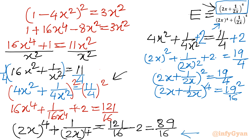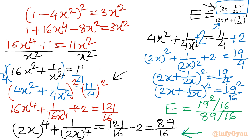Our expression E equals numerator (2x + 1/(2x))⁴ = 361/16 divided by denominator (2x)⁴ + 1/(2x)⁴ = 89/16. The 16s cancel, and the final answer is E = 361/89.